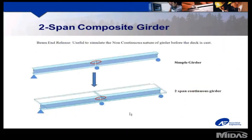Before we look at the analysis of the two-span example, it is worth mentioning the practicality of using a beam-end release. It's applied in the initial analysis stage to simulate each span acting as a simple beam for girder self-weight and wet concrete, and the beam-end release is subsequently removed to achieve the continuous condition once the composite section is active.